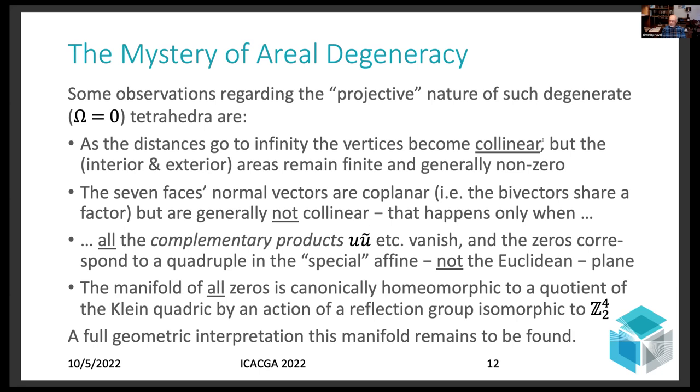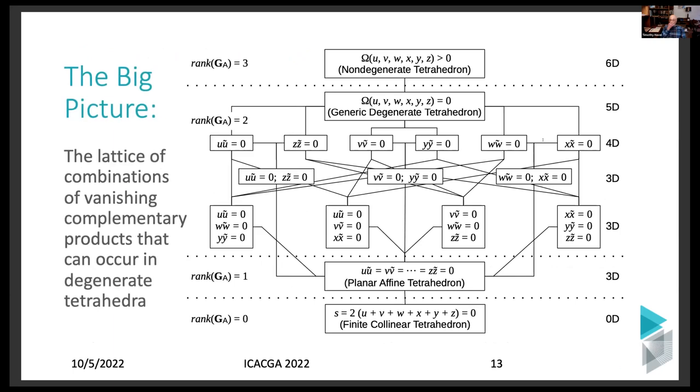The Klein quadric is an algebraic realization of the Grassmannian of all lines in projective 3-space. Here, it has a completely different geometric interpretation. And in fact, you can look at the big picture, which decomposes it into a lattice of sub-manifolds, which can be defined by which complementary products vanish. The full manifold is five-dimensional, as indicated on the second level of this lattice. As you require any complementary product to vanish, it drops to a four-dimensional manifold. You require any two to vanish, two opposite, I would call them, because they correspond to opposite pairs. And that drops it to 3D, but you try to add any more, and it immediately drops down to what is shown here and goes all the way back down.